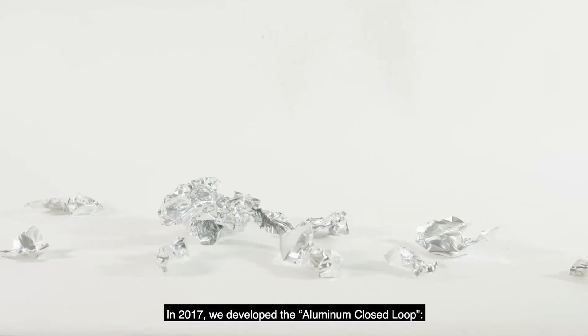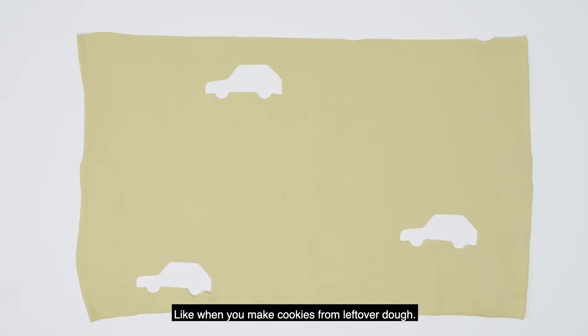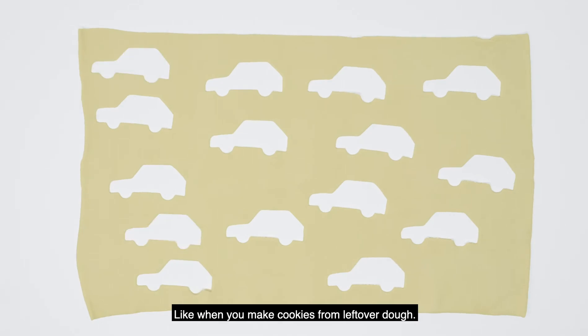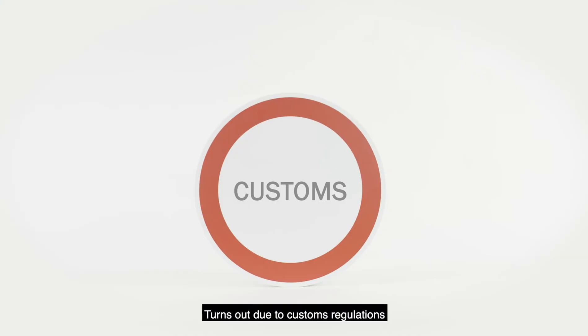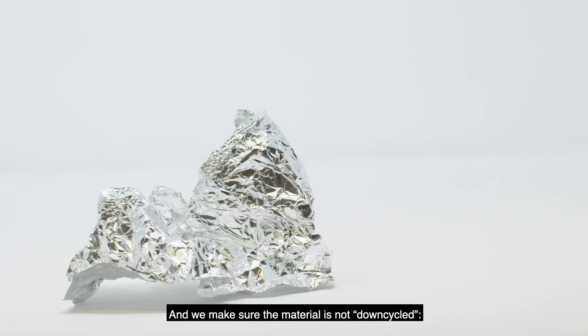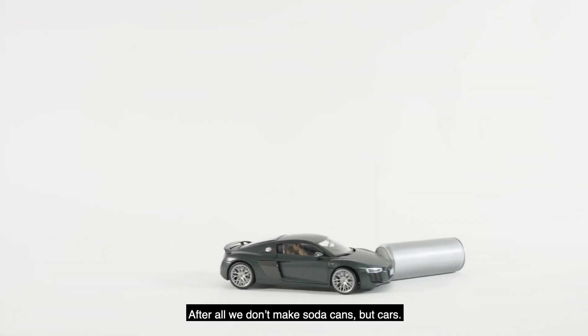In 2017, we developed the aluminum closed loop, a method of taking the scraps of aluminum accumulating during production and giving them back to the supplier who then makes new aluminum parts. Like when you make cookies from leftover dough. That sounds easier than it is. Turns out, due to customs regulations, you can't transport scraps over borders just like that. And we make sure that the material is not down-cycled. After all, we don't make soda cans but cars.